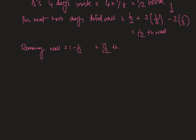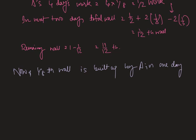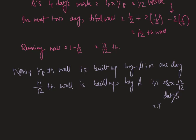Now, 1/8 of the wall is built up by A in one day. Therefore, 11/12 of the wall is built by A in 8 × 11/12 days, which results in 7 and 1/3 days.